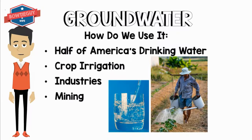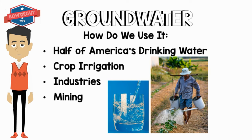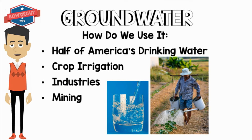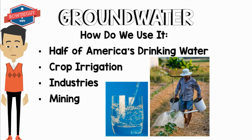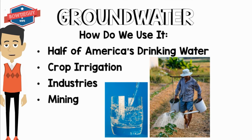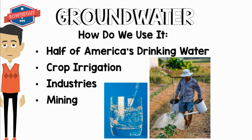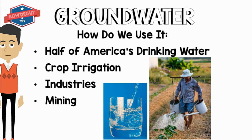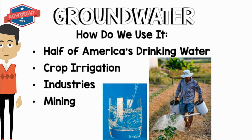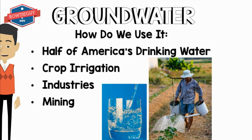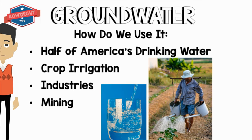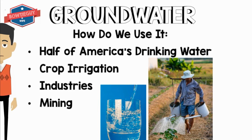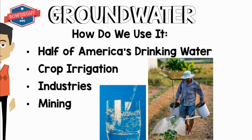Now let's go back to groundwater — how do we use it? Half of America's drinking water comes from groundwater. It is utilized for crop irrigation, for industries, and for mining.